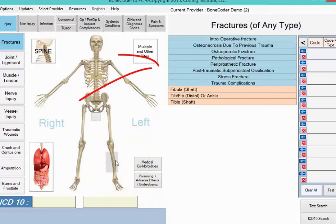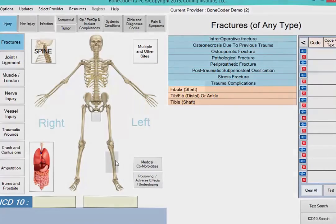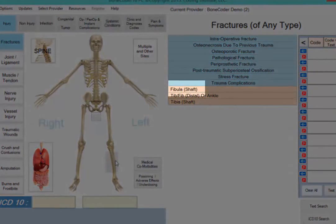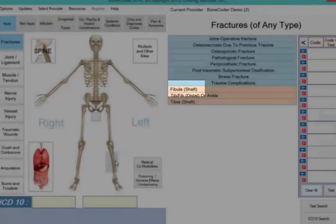Clicking the lower leg reveals new options related to relevant anatomy and specific types of diagnoses like stress fracture. These new options help you narrow your code selection. Our fracture is in the shaft of the fibula, so the next step is to click that option.